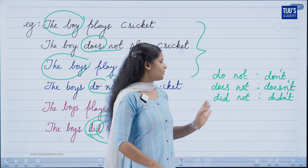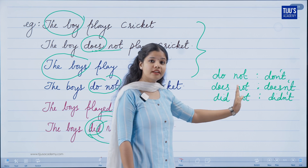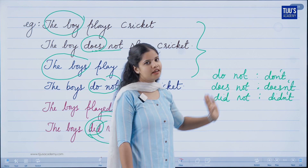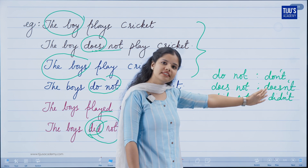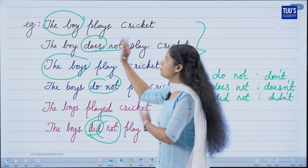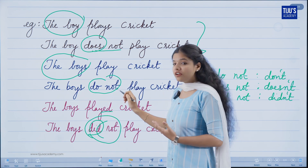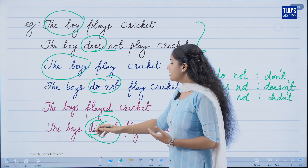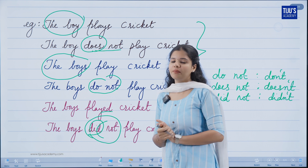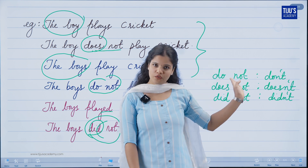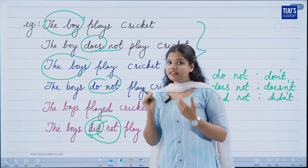That's why we use do not, does not, and did not. How do we usually use these in sentences? Under contraction forms: don't, doesn't, didn't. For example, 'the boys did not play cricket' becomes 'the boys didn't play cricket.' We use contractions in spoken and informal sentences.